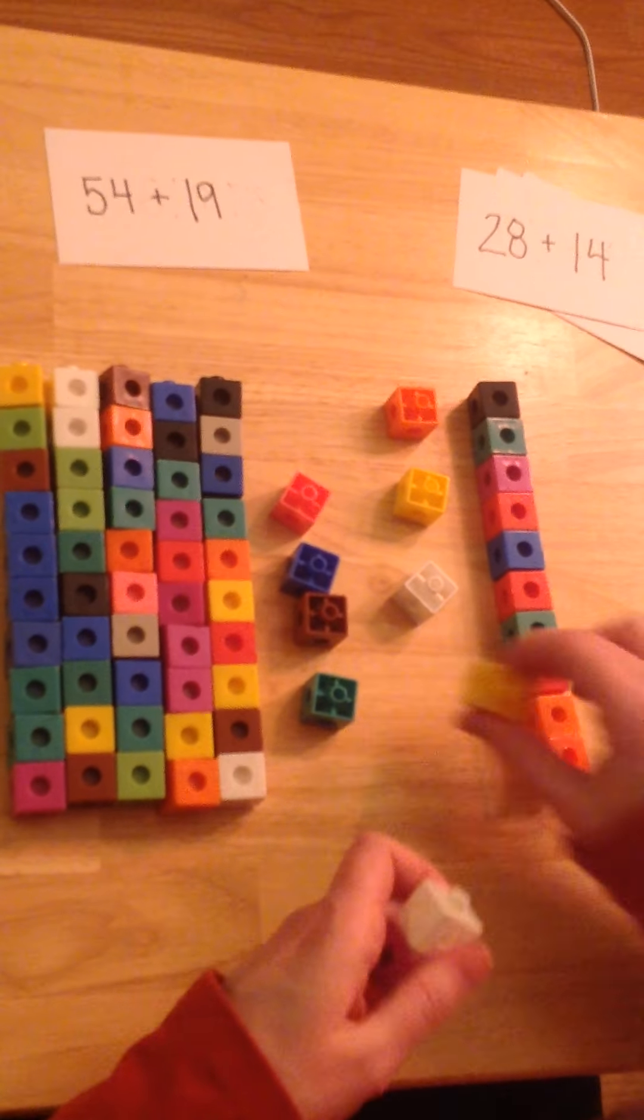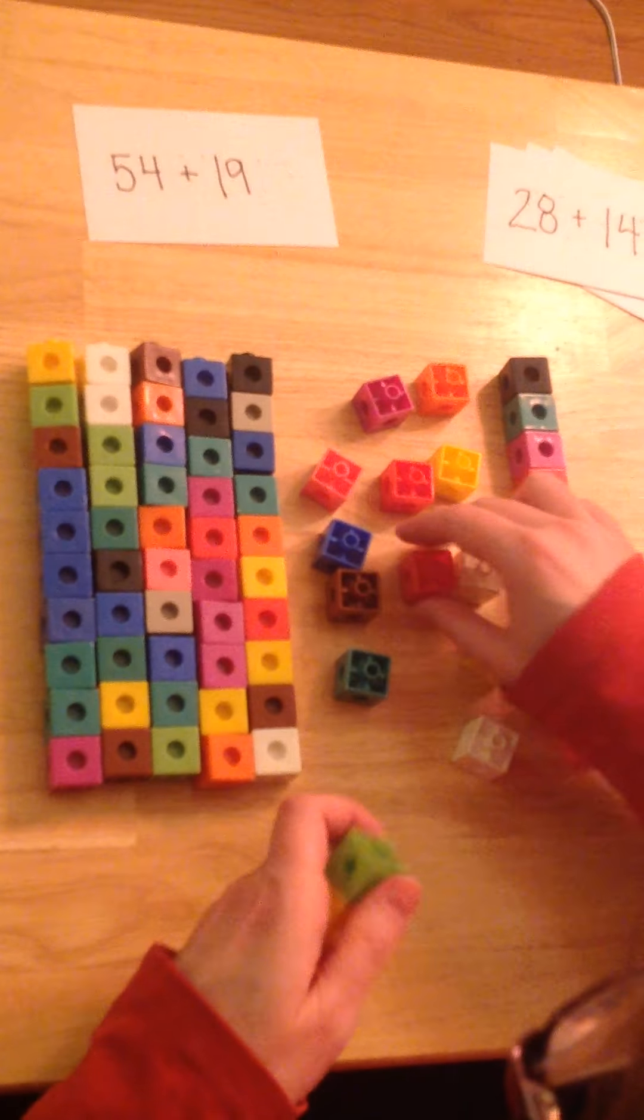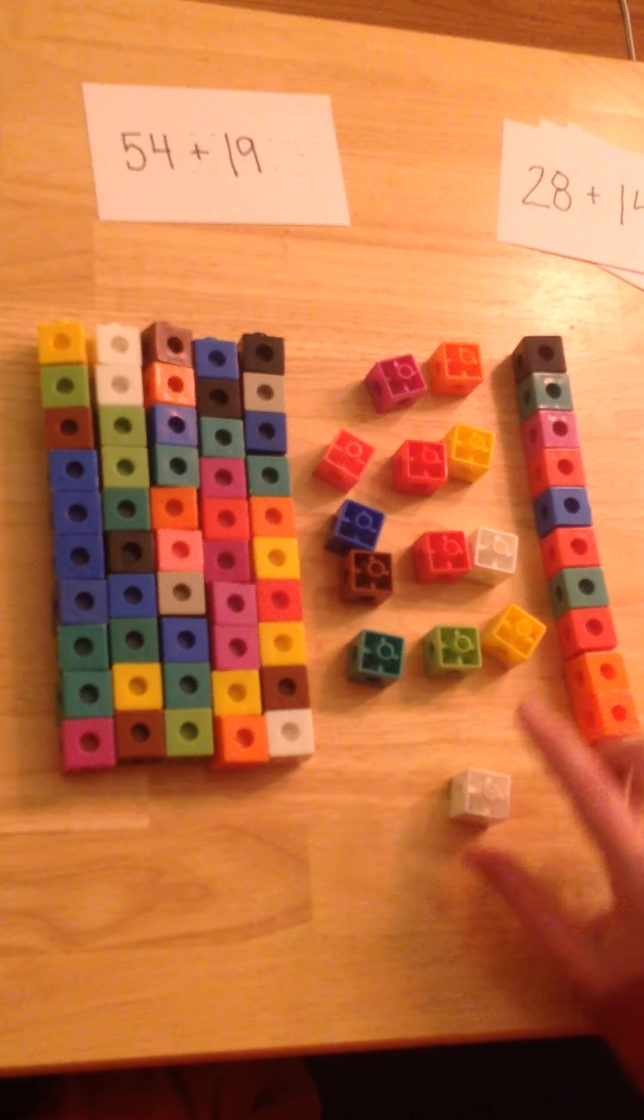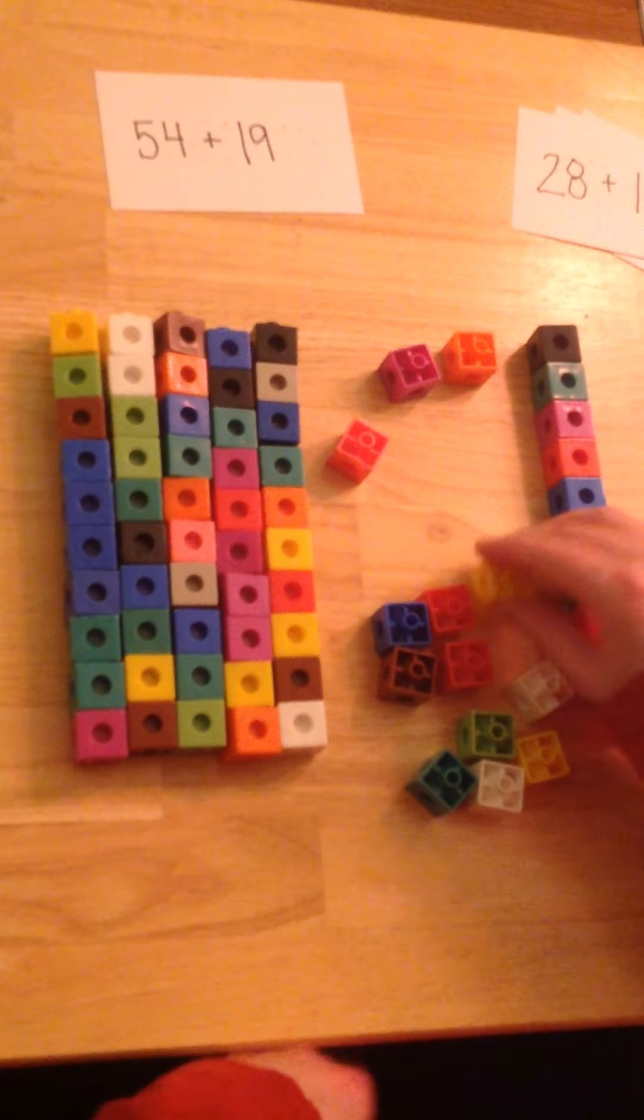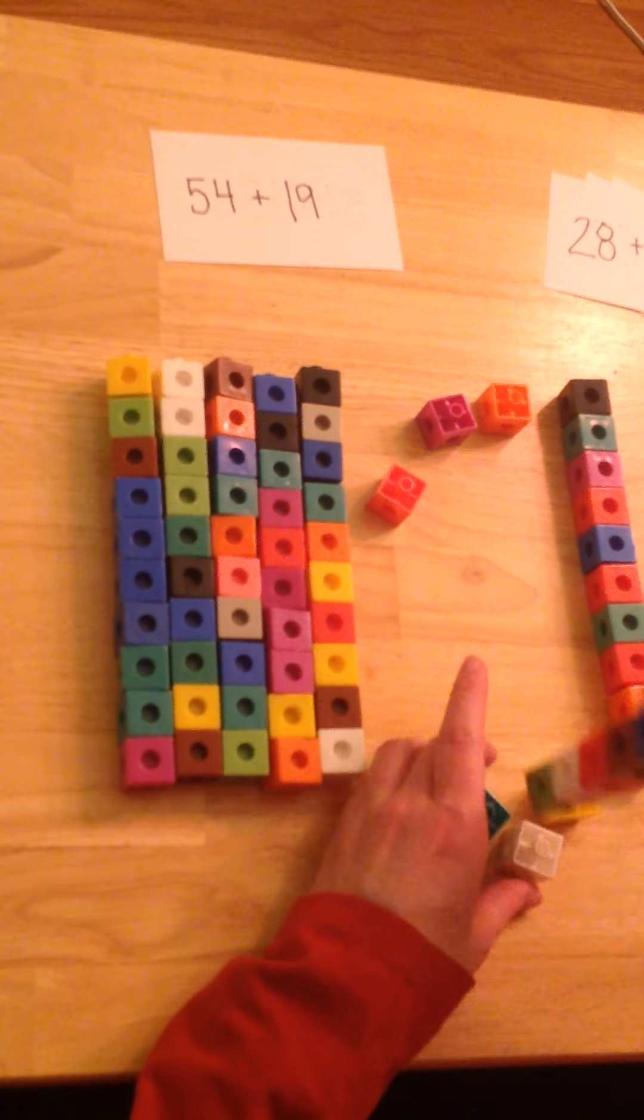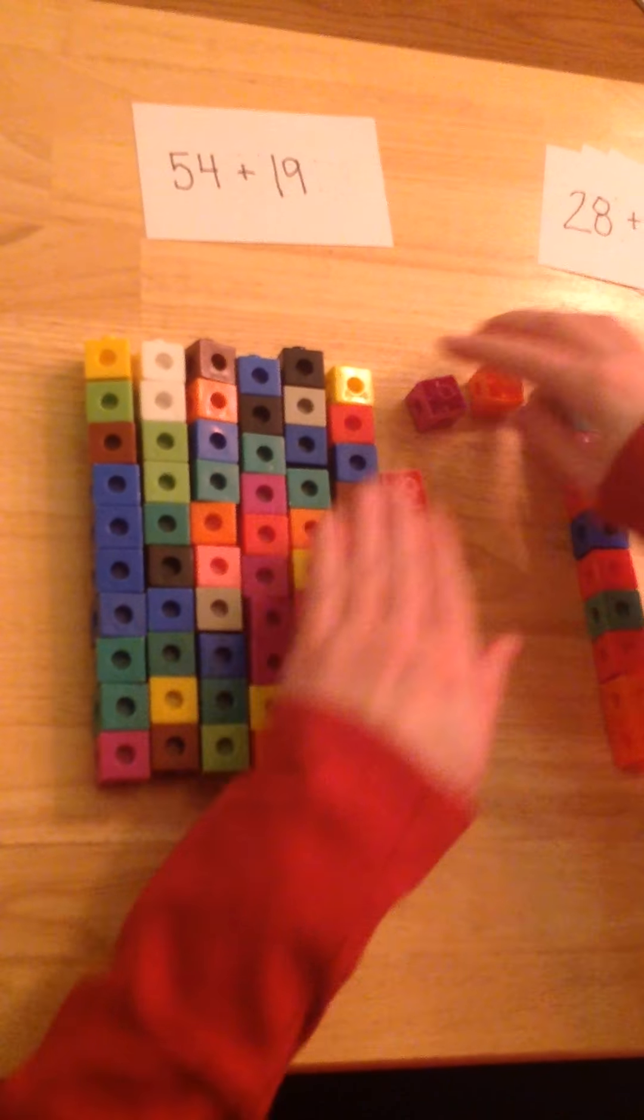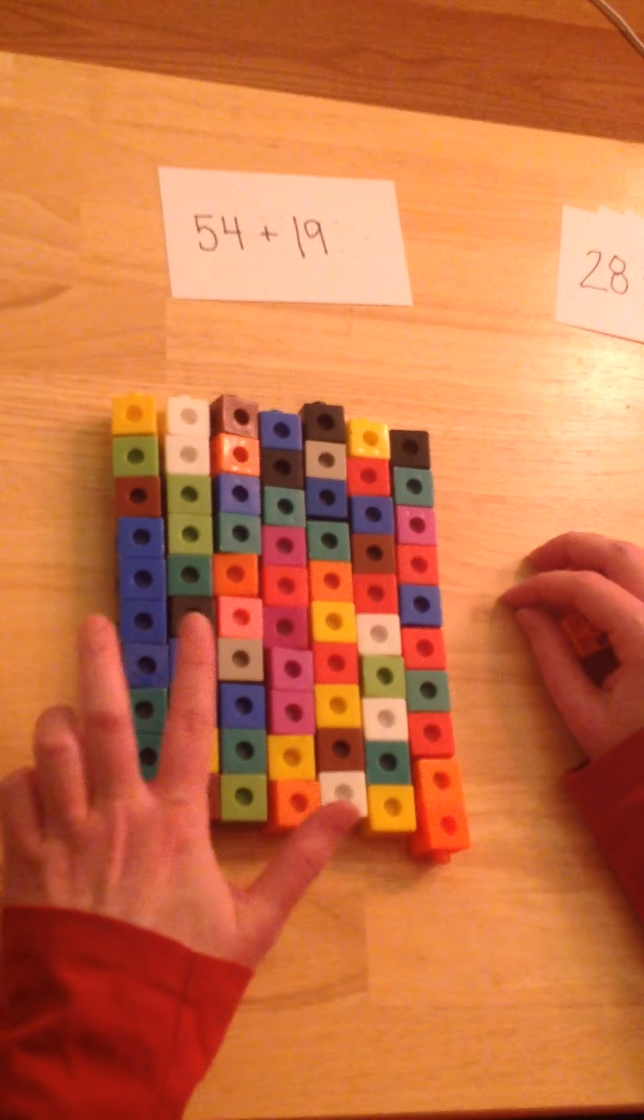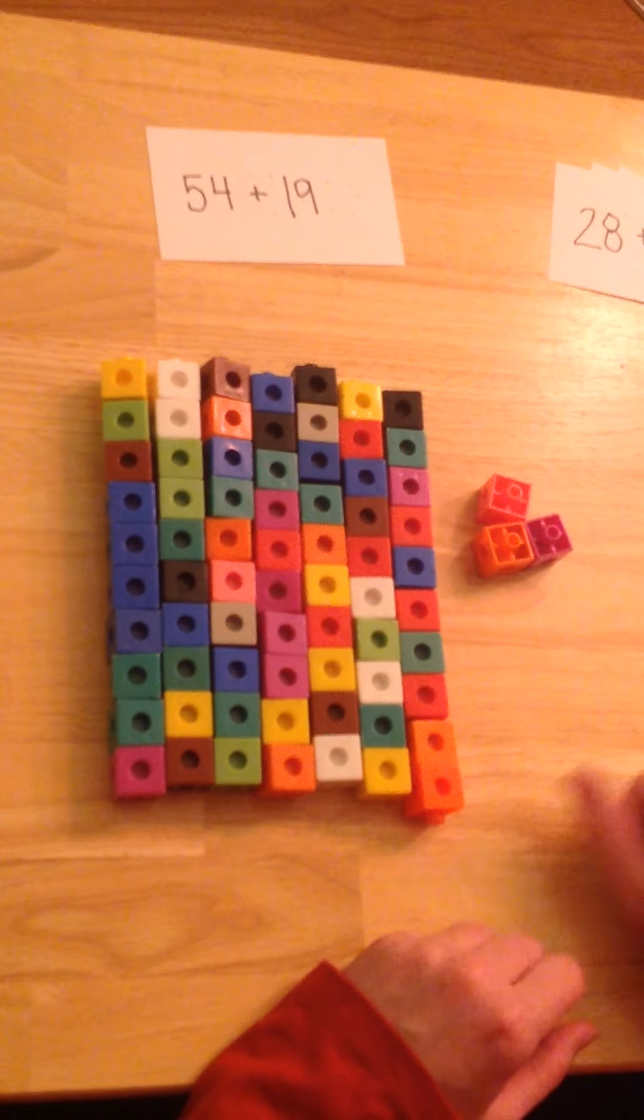I'm going to count my ones first. 1, 2, 3, 4, 5, 6, 7, 8, 9, 10. I'm gonna make these into a new 10. These will be my extra leftover ones. So 54 plus 19 is 10, 20, 30, 40, 50, 60, 70, 71, 72, 73.